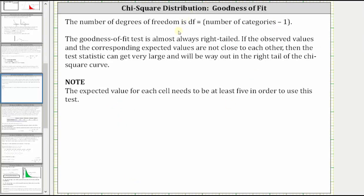The number of degrees of freedom is equal to the number of categories minus one. The goodness of fit test is almost always right-tailed. If the observed values and the corresponding expected values are not close to each other, then the test statistic, or chi-square, can get very large and will be way out in the right tail of the chi-square curve. It's also important to note the expected value for each cell needs to be at least five in order to use this test.